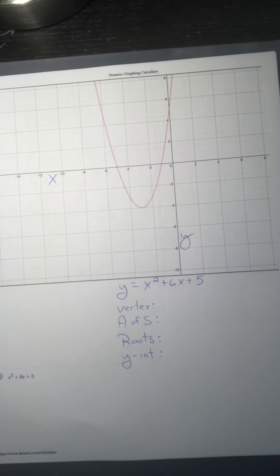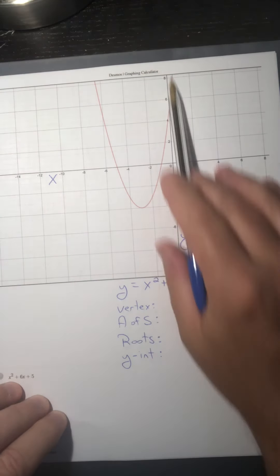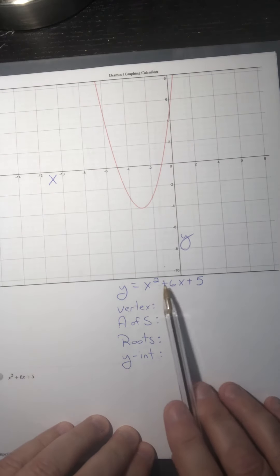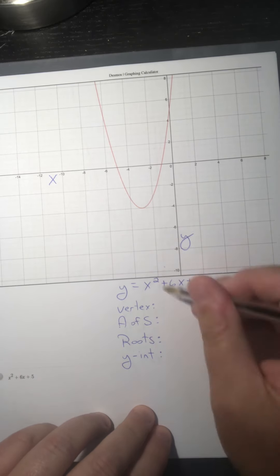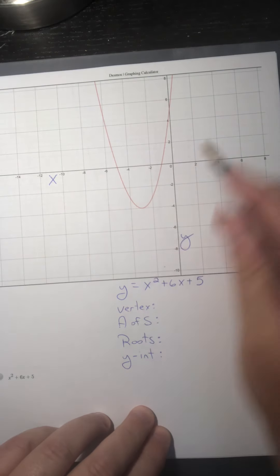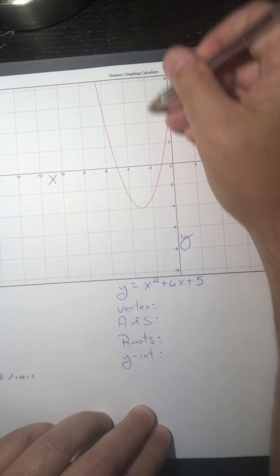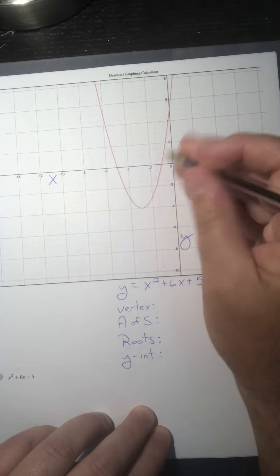Now here's our next example. The x-axis is here, the y-axis is here. This graph is for the equation x squared plus 6x plus 5. Notice we have more numbers — an a, b, and c — and the graph actually moves. These numbers have made the graph shift to the left and down.